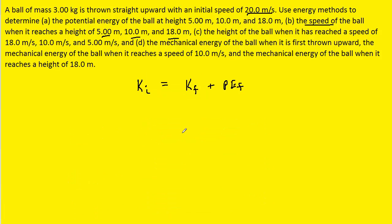Now for part C, in order to calculate the height of the ball when it reaches these three different speeds, we can once again use the conservation of energy, where we set the initial kinetic energy equal to the final kinetic energy plus the final potential energy.